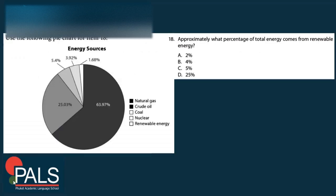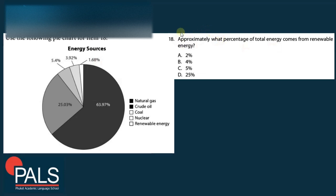Question 19 uses a pie chart showing energy sources. Approximately what percentage of total energy comes from renewable energy — 2%, 4%, 5%, or 25%? The key shows: natural gas 63%, crude oil 0.97%, coal 25%, nuclear 3.92%, and renewable 1.68%. Rounding 1.68% gives approximately 2%. The correct answer is A, approximately 2%.